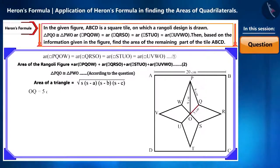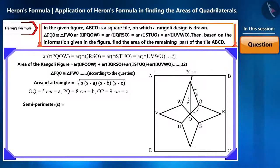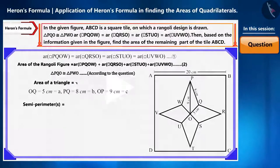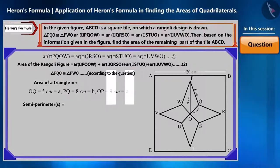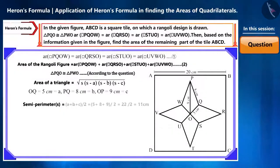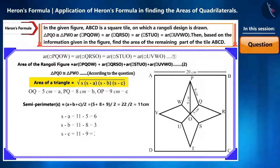Let's assume OQ as A, PQ as B, and OP as C. Now we have to find the value of the semi-perimeter that is S. You can pause the video and try it. In this way, we obtained S as 11 cm. Keeping the formula in mind, let's find the value of S-A, S-B, and S-C. You can see that we obtained it as 6, 3, and 2 respectively.